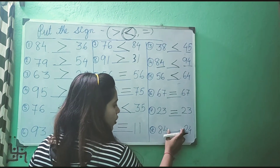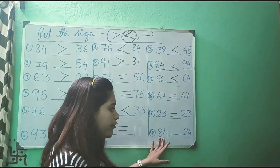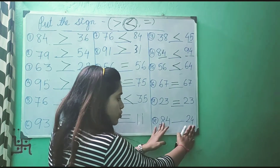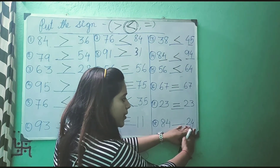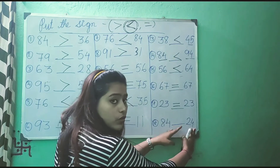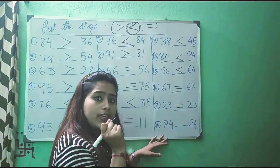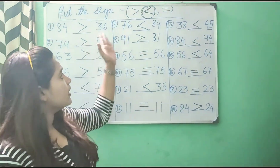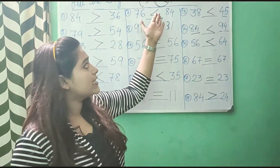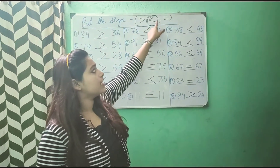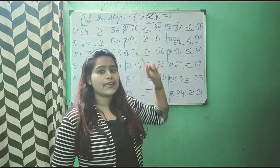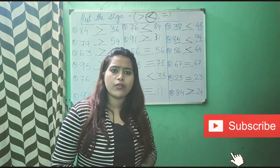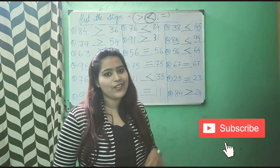Now, 84 and 24. 84 is the bigger number, right? 24 is the smaller one. So as 84 is bigger than 24, we will put greater than sign. So these are greater than, less than and equals to. Practice it at home, in book or copy, whatever you want. And till then, take care. Bye-bye.